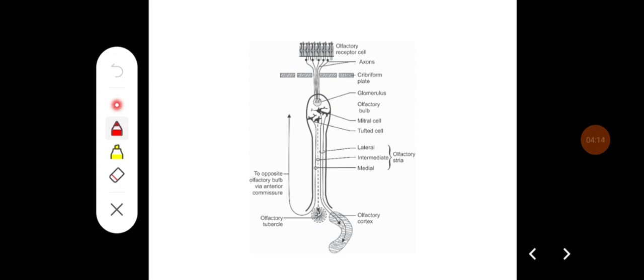This is a diagram showing olfactory pathway from the olfactory receptors, the axons pierce through the cribriform plate, reaches the glomerulus from the mitral and tufted cells.